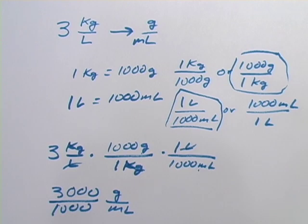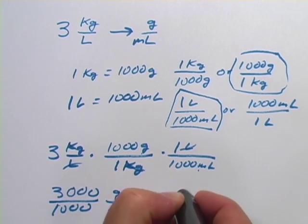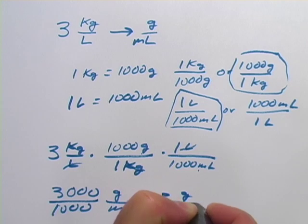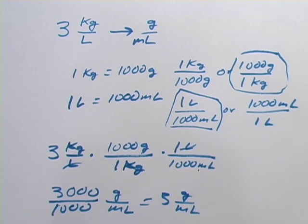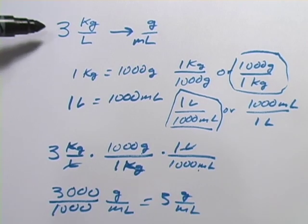And this is grams over milliliters. And of course, 3000 divided by 1000 is just three. So I end up with three grams per milliliter,